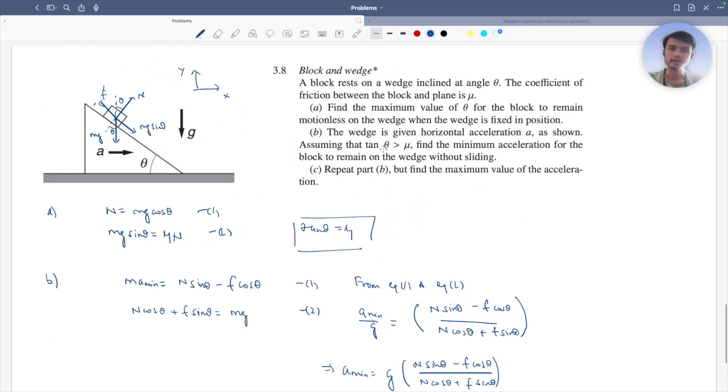In part c, they say find the maximum value of acceleration. So for maximum value of acceleration, the diagram changes a little.